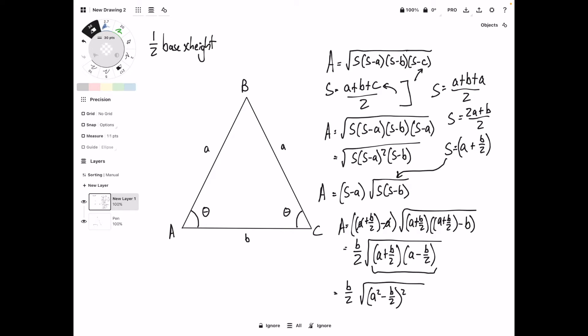And finally, what we can do is rewrite what's inside the square root as a squared minus b squared over 4. And so this right here, put over here so it's a little bit more out in the open. This is how you can find the area of an isosceles triangle if you only know the side lengths.